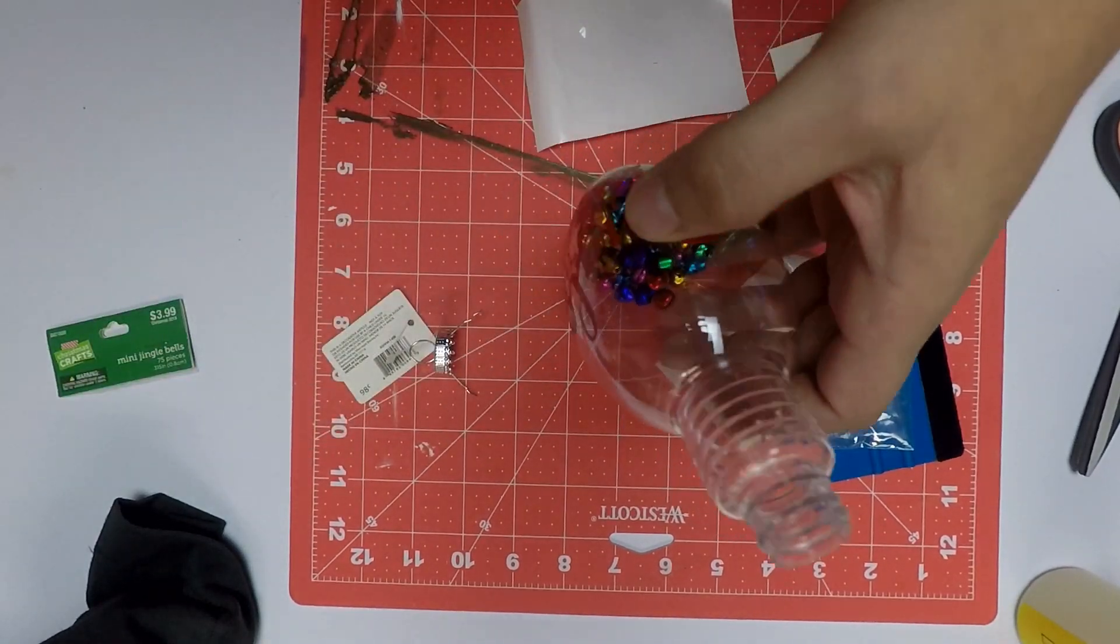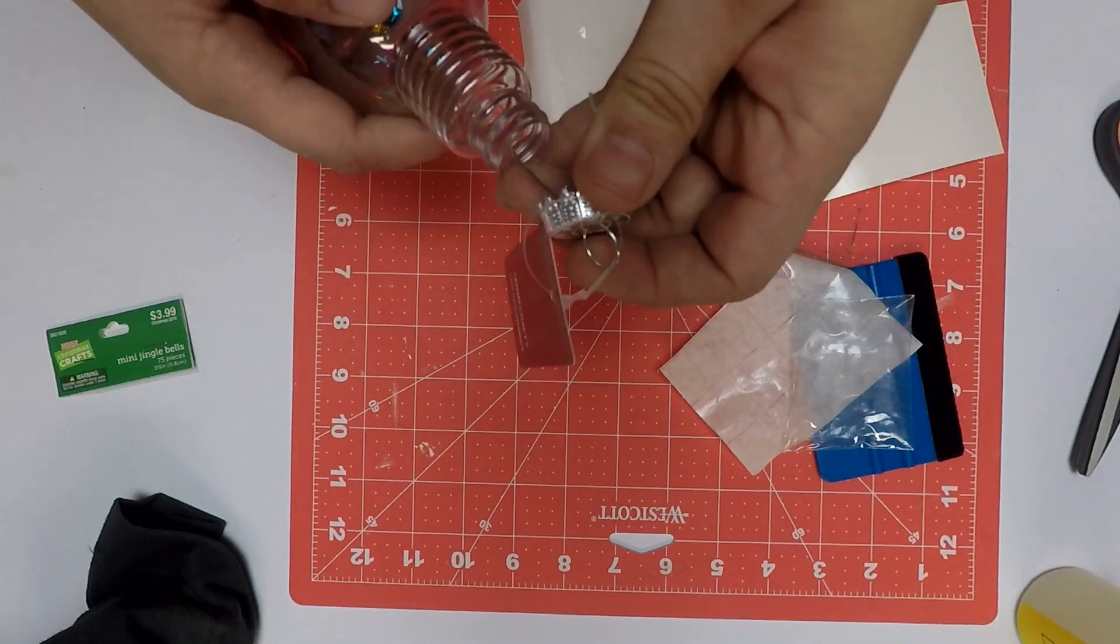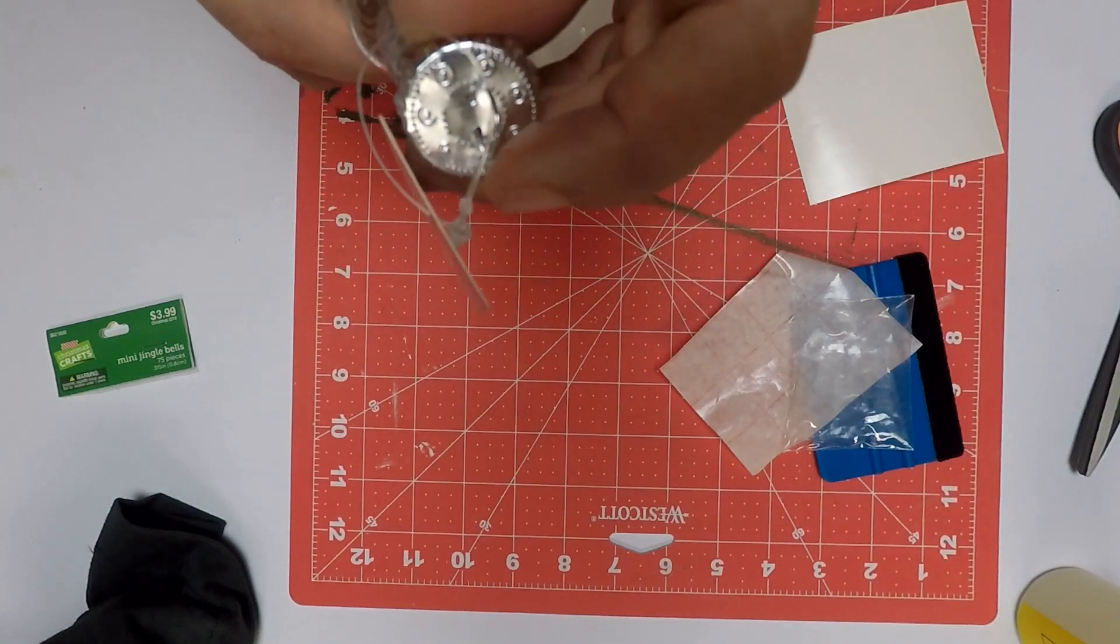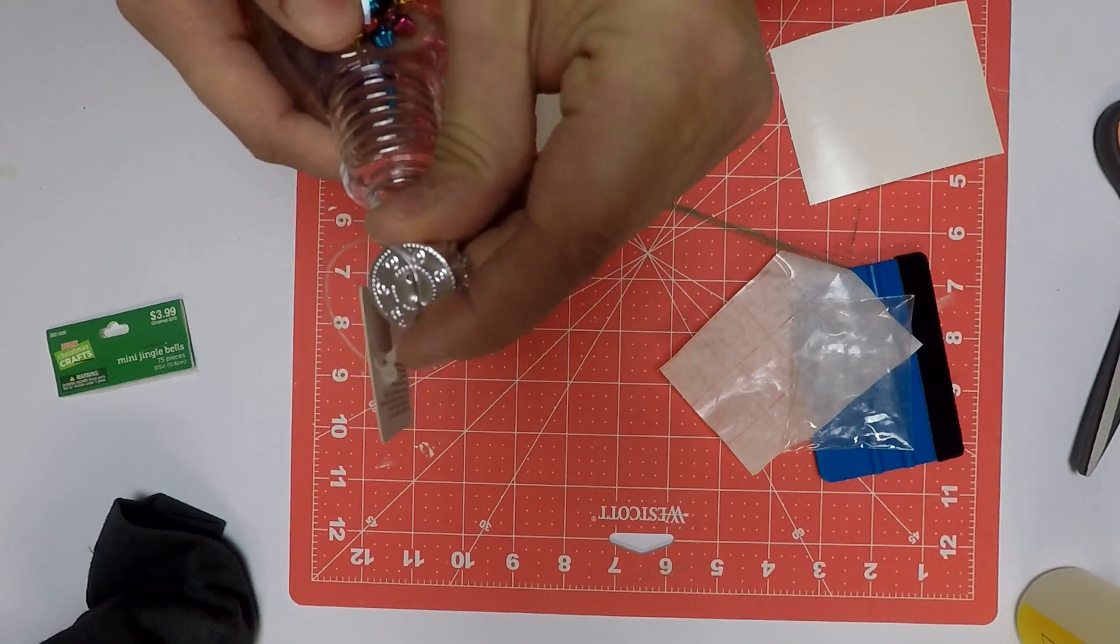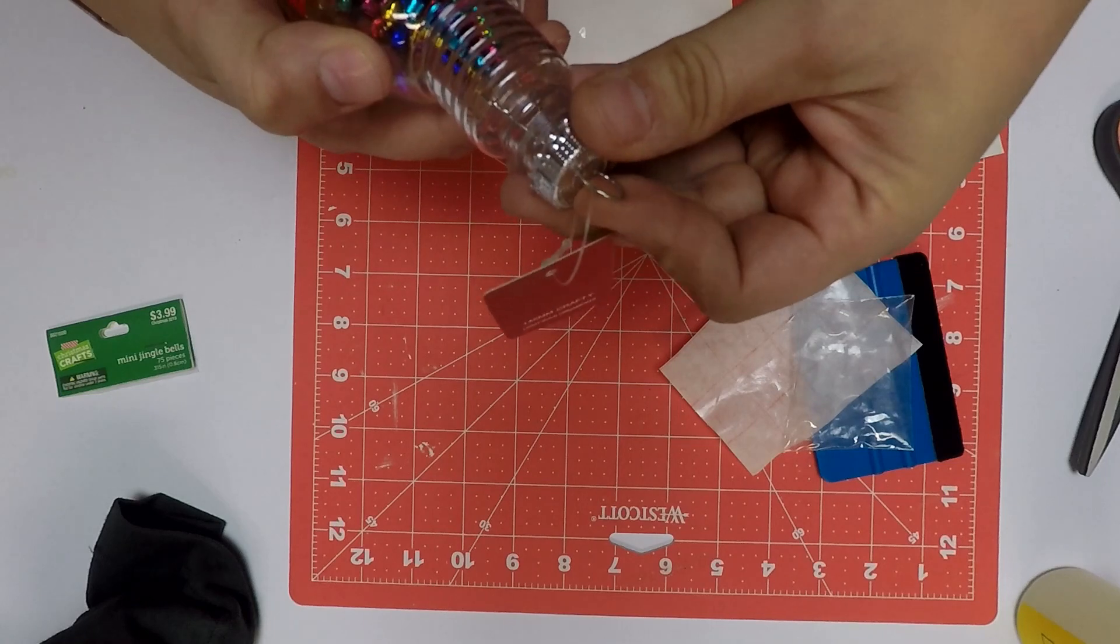If you are making this, these are a plastic ornament that is shatterproof, but if you do have small children, I would recommend taking and gluing the top back on, just in case they decide to play with it and shake it, so that way the jingle bells are not a choking hazard.